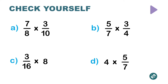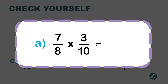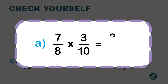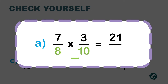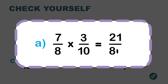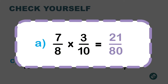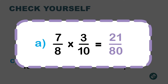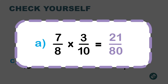Let's try the first exercise: multiply 7/8 times 3 over 10. So 7 times 3 is 21, and 8 times 10 is 80. Can I simplify? No — there's no number that can divide both 21 and 80 at the same time.